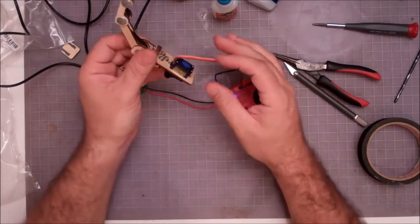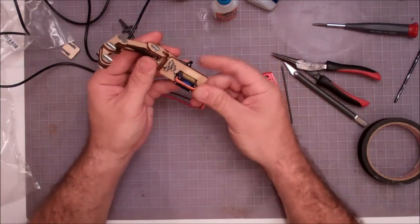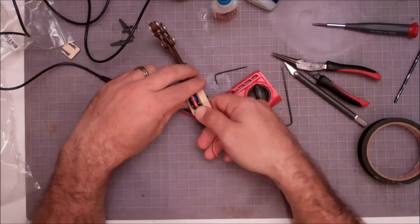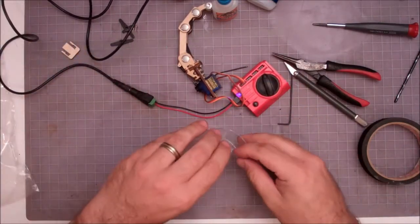One thing I like to do is if you flip the servo over, this wire tends to get in the way. I will tend to take that wire and pull it tight against the bottom of the servo.